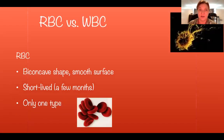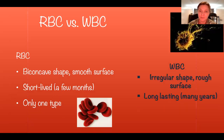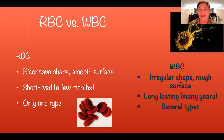A quick comparison of red blood cells versus white blood cells: Red blood cells are biconcave in shape, have a smooth surface, are short-lived — only a few months — and there is only one type. White blood cells, on the other hand, are irregular in shape, have a rough surface, are long-lasting — many years — and there are several types.